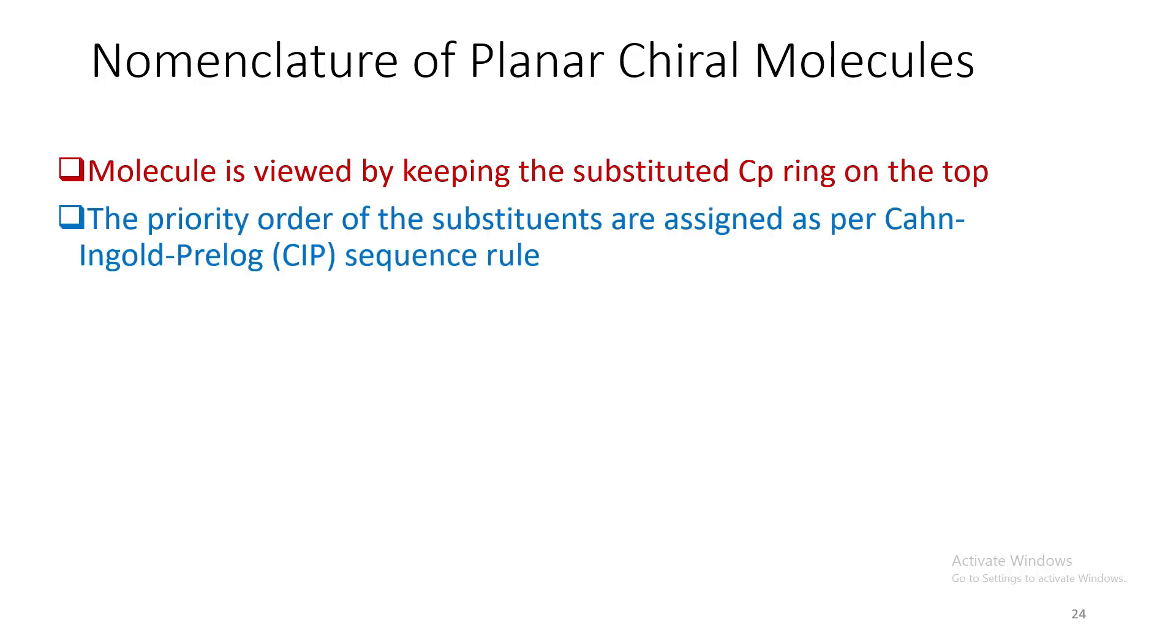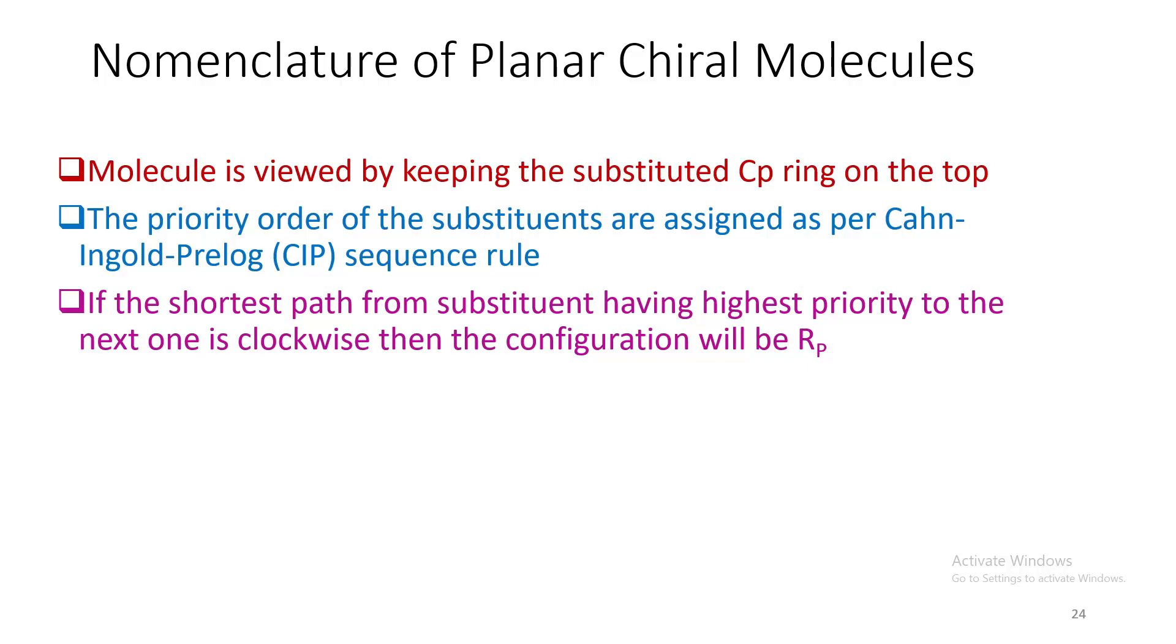Let us come to the nomenclature of such molecules. These molecules are first viewed by keeping the substituted Cp ring on the top. Then priority order of these substituents are assigned as per Cahn-Ingold-Prelog CIP sequence rule. Then if the shortest path from the highest priority substituent to the next one is clockwise, then the configuration will be Rp. If the same path is anticlockwise, then it will be Sp.